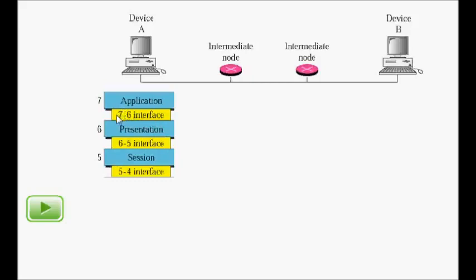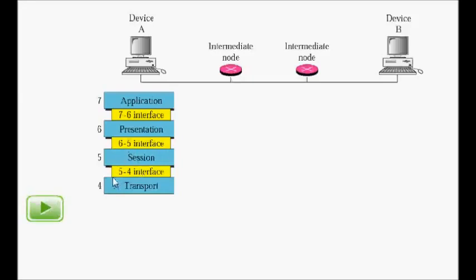The presentation layer decides whether to encrypt the data so it's not visible to attackers, and whether to compress it. Then the data goes to the session layer, which starts a session between the FTP client and FTP server. Then we have the transport layer, where the FTP client process and the FTP server process each have port numbers on which they are running.